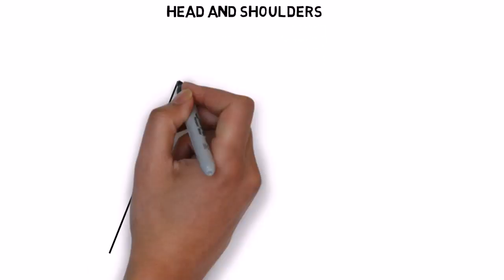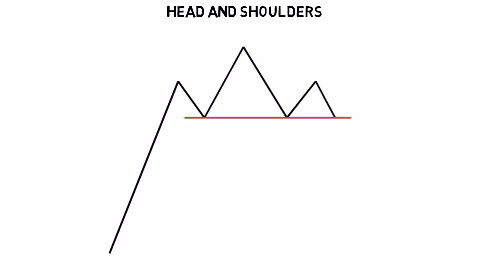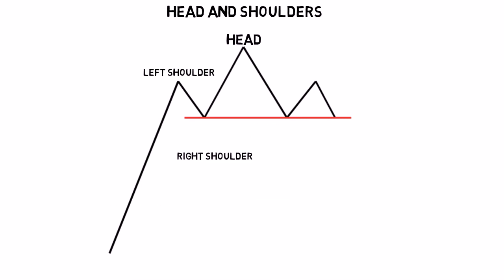Head and Shoulders is a bearish reversal pattern which forms after a strong move upwards. It consists of a peak as the left shoulder, a higher peak as the head, and a lower peak as the right shoulder, and a neckline drawn connecting the two lows between the shoulders.